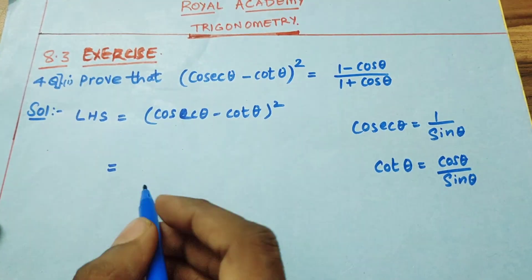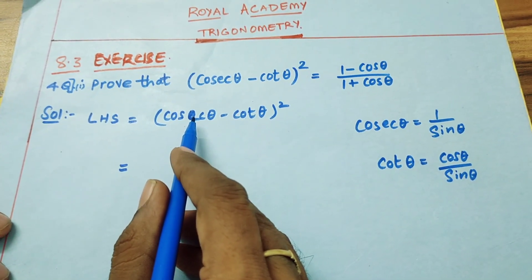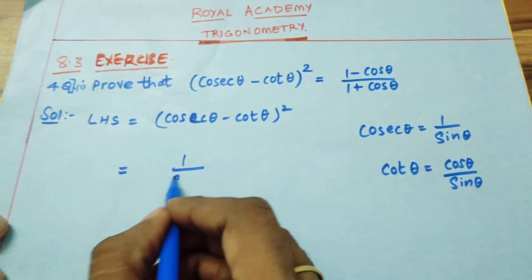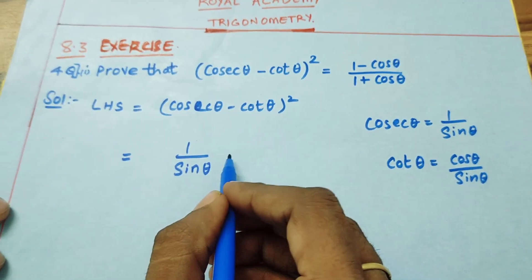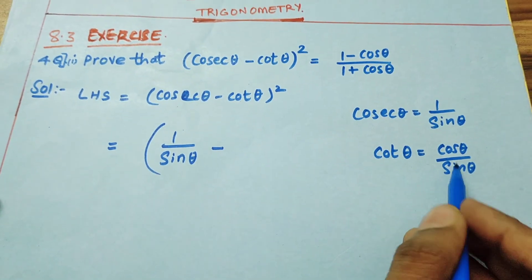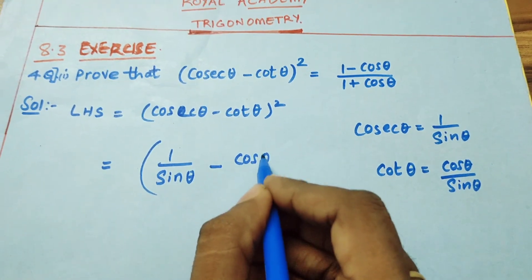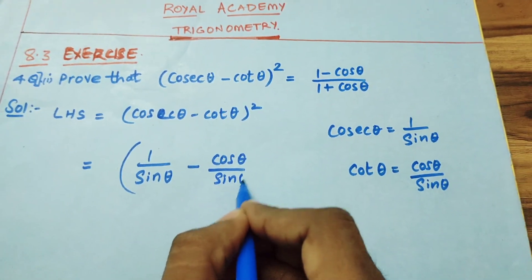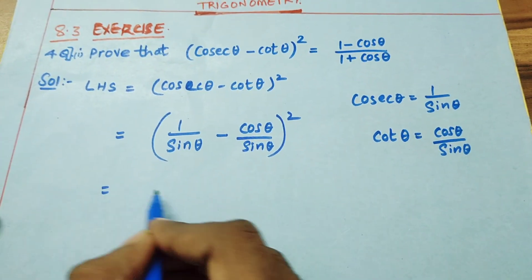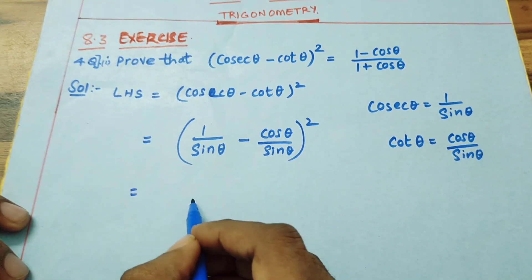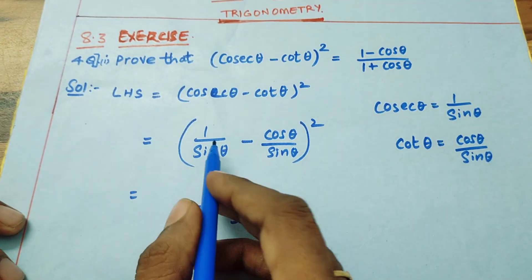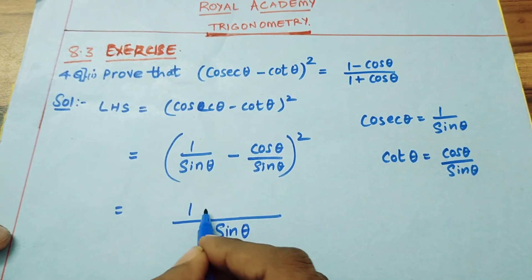Now look at the LHS. I will substitute the value of cosecant θ as 1/sin θ, giving us (1/sin θ − cos θ/sin θ)². You can see there are two fractions, so the LCM for both denominators is sin θ. We get (1 − cos θ)/sin θ, the whole expression squared.